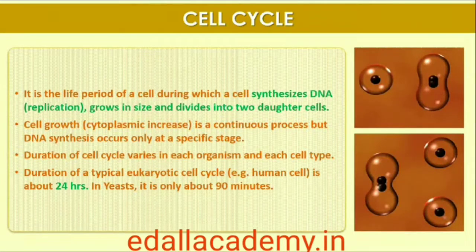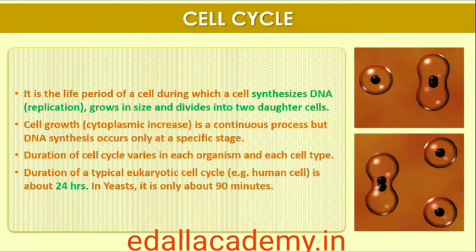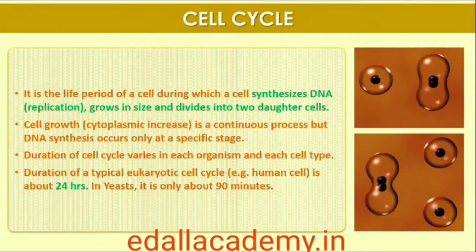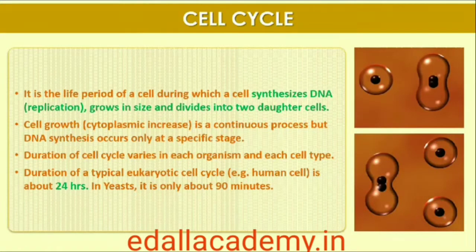Although cell growth, in terms of cytoplasmic increase, is a continuous process, DNA synthesis occurs only during one specific stage in the cell cycle. The replicated chromosomes — DNA — are then distributed to daughter nuclei by a complex series of events during cell division. These events are themselves under genetic control.